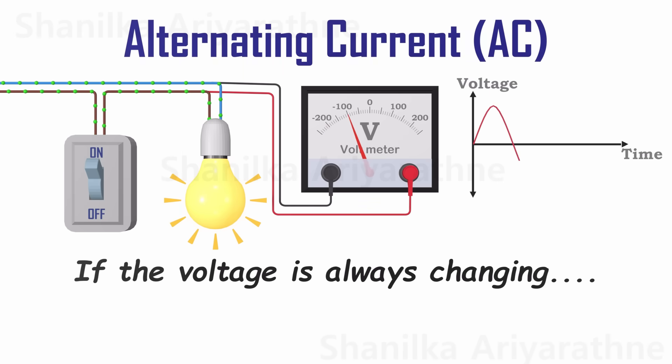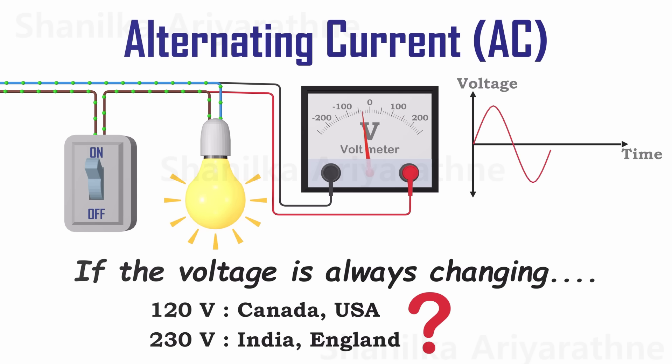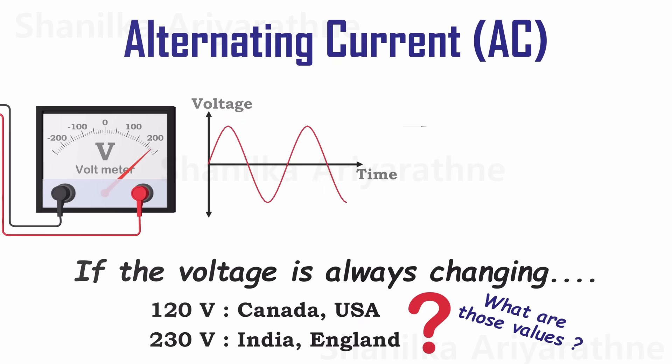If the voltage is continually fluctuating, you might wonder why we use standardized values like 120 volts in Canada and the USA or 230 volts in places like England or India. What do these numbers signify when the voltage is in a constant state of change? You might assume that the voltage number represents either the highest peak or the average it reaches.